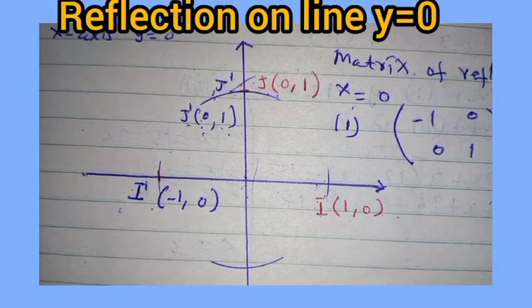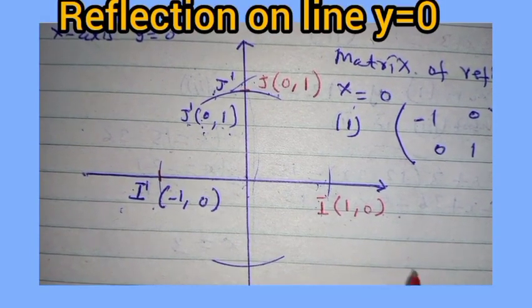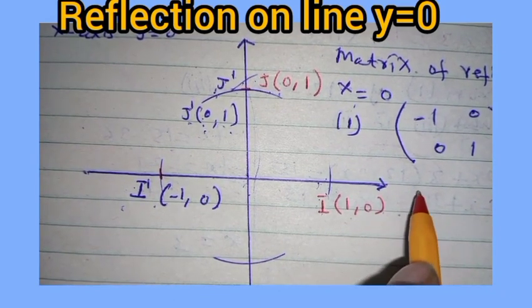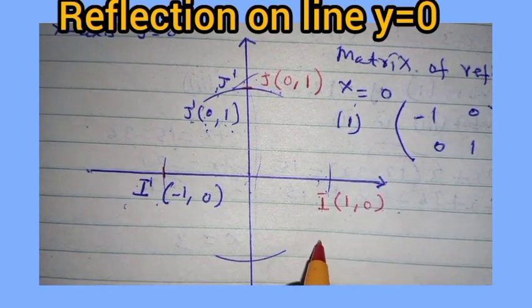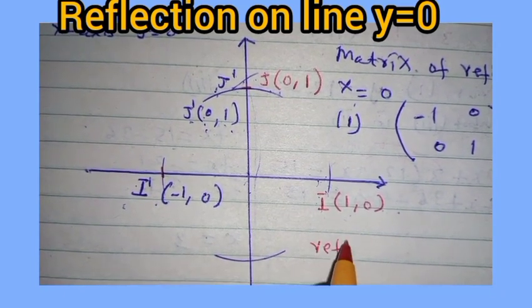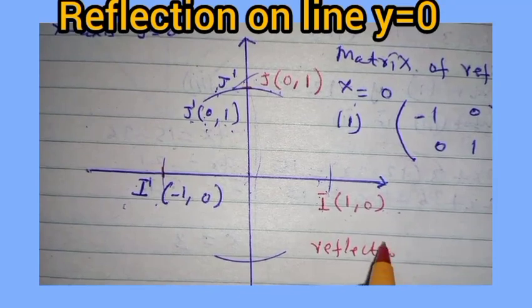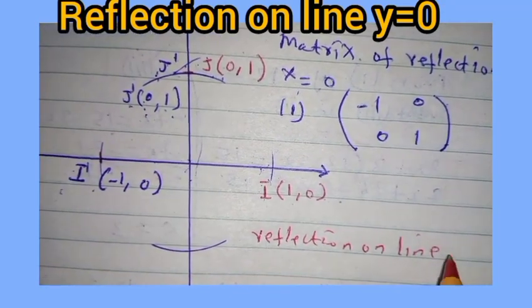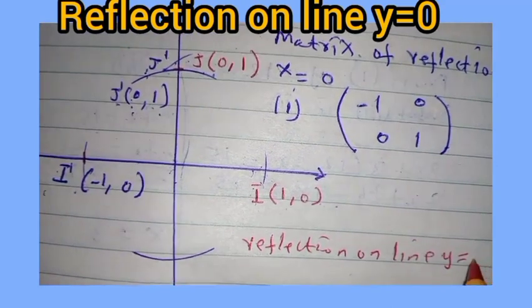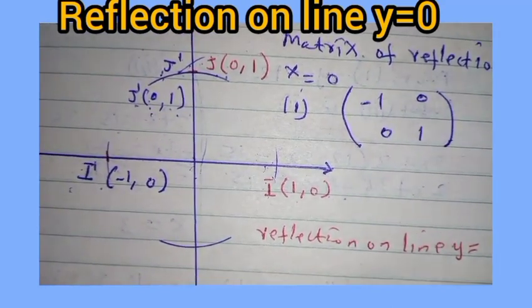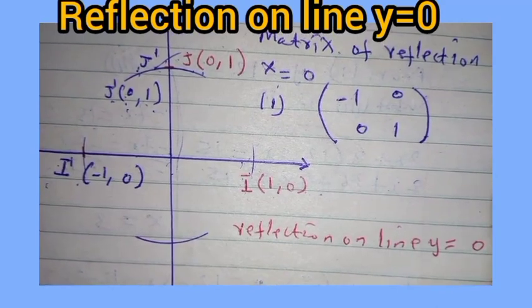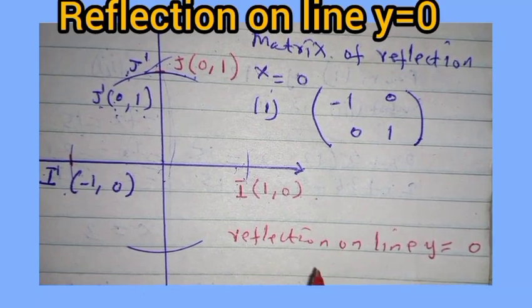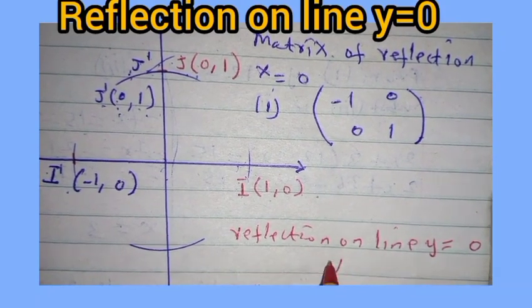Next we consider reflection on the line y is equal to 0. Reflection on the line y is equal to 0 — that is what we want to consider in this case. Reflection on line y is equal to 0, which is on the x-axis.